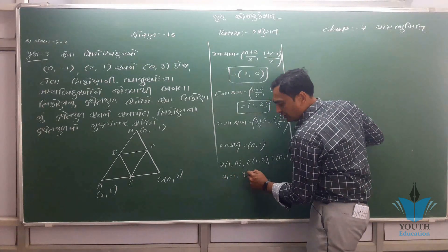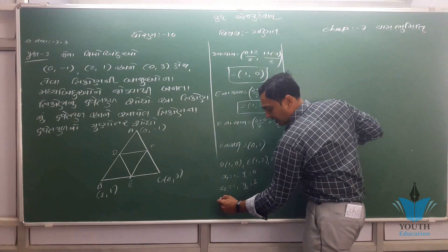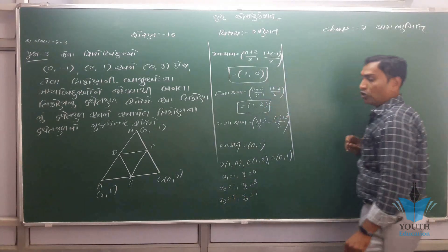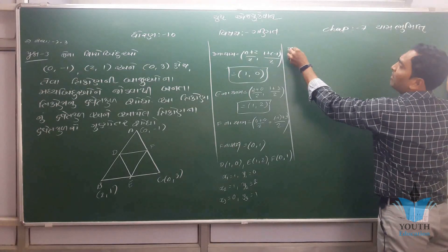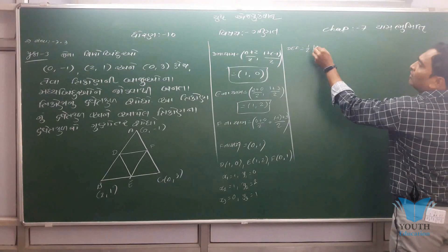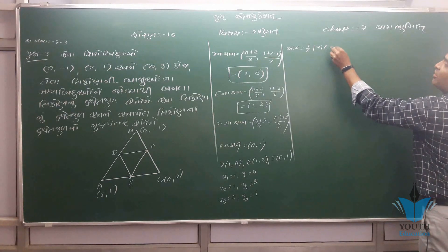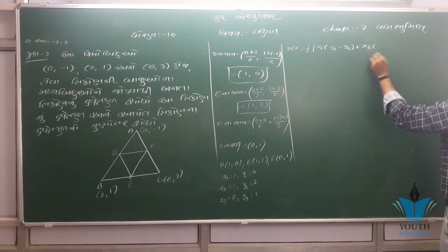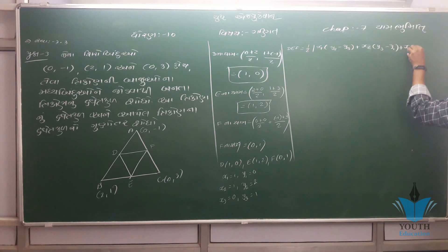X1=1, Y1=0, X2=1, Y2=2, X3=0 and Y3=1. So let's take DEF. Area of DEF = (1/2) of x1 times (y2 minus y3) plus x2 times (y3 minus y1) plus x3 times (y1 minus y2).